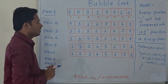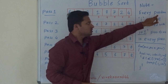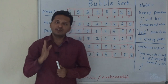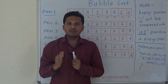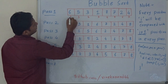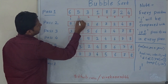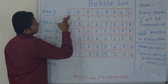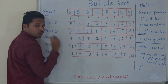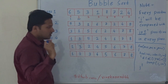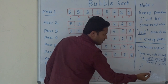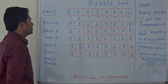Before starting the algorithm, just read the note here. Every position i will be compared with position i plus 1. So this means in every pass of the algorithm, every position will be compared with its next position. Here, if the element at position i is greater than the element at position i plus 1, then we have to swap — that is, if a[i] is greater than a[i+1], then we swap.